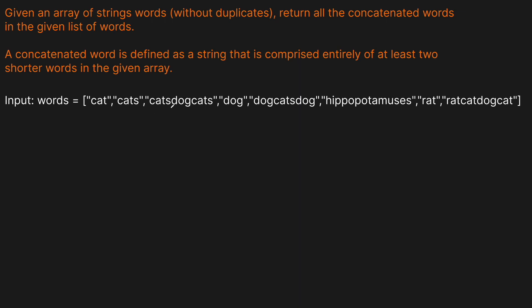What about catsdogcats? Well, we have 'cats', we have 'dog', and we have 'cats' — so this is actually a solution. Dog — we can't really do anything with it, it's a single word. What about dogcatsdog? We have 'dog', we have 'cats', and we have 'dog' — so this is also a solution.